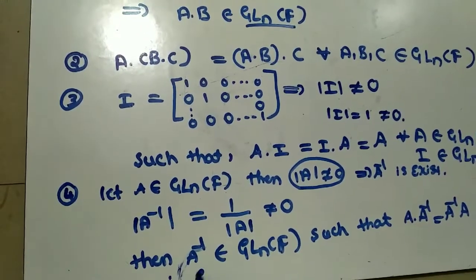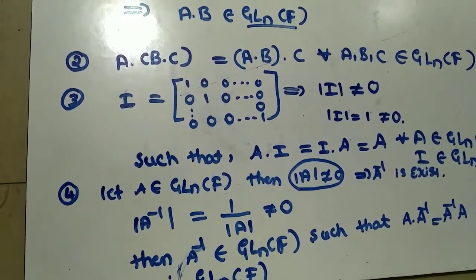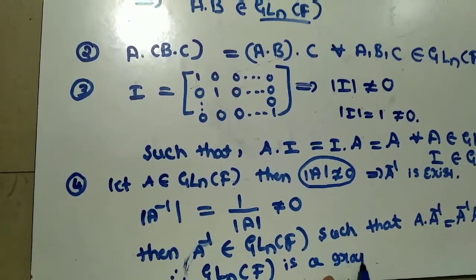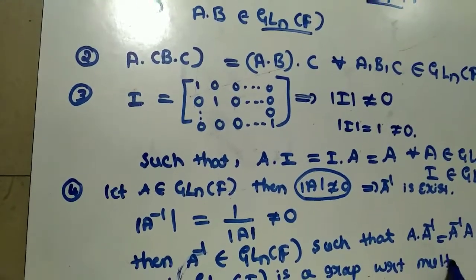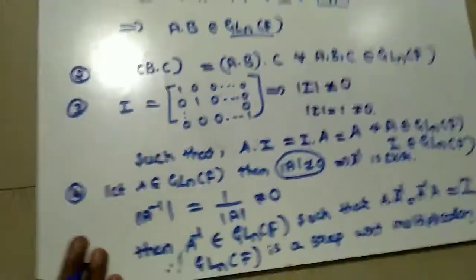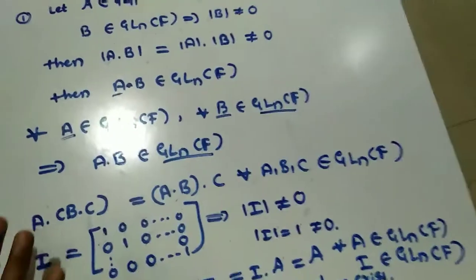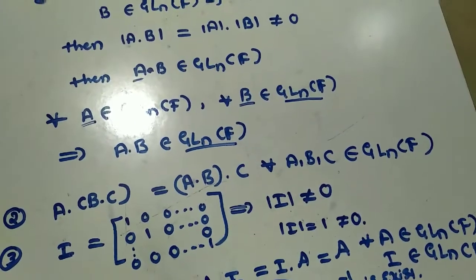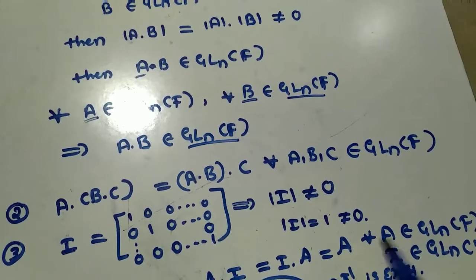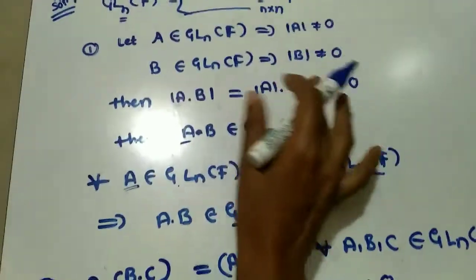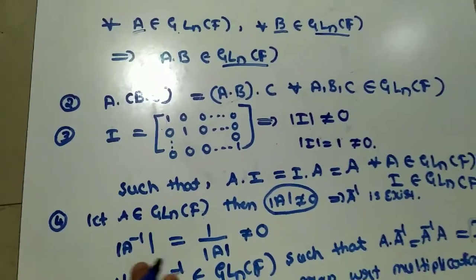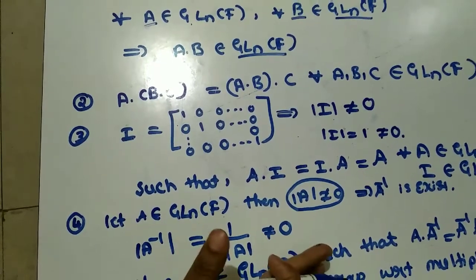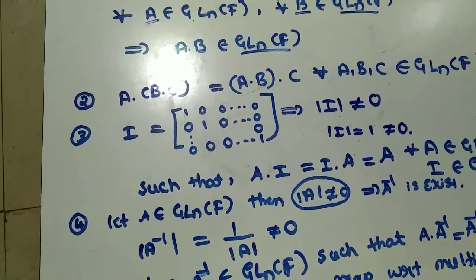Since all four laws are satisfied, GL(N,F) with order N over field F is a group with respect to multiplication. The key point is that because we are dealing with the General Linear group, we take the condition det(A) ≠ 0. For checking all four laws, just verify that elements belong to the given non-empty set. I hope this is understood. If you have any doubts, let me know. Let us do some examples for this.